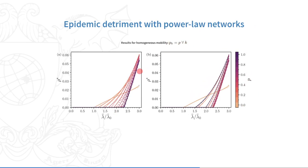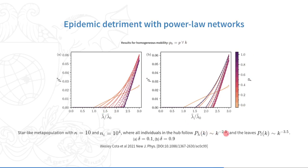The same happens when parallel connectivity distributions are assumed inside each patch. Note that not only the epidemic threshold increases, but also the prevalence of infected individuals.